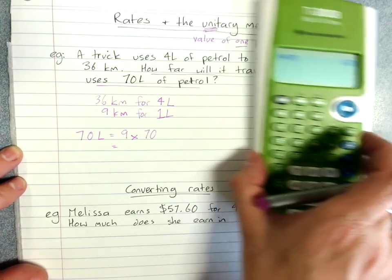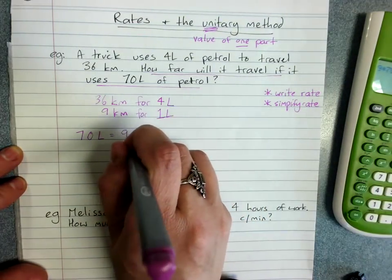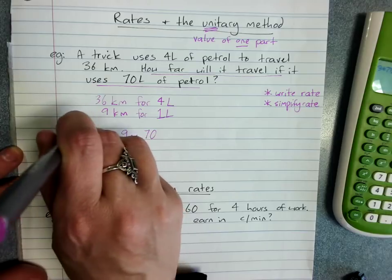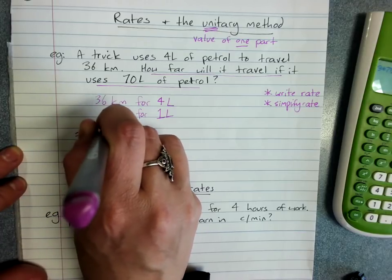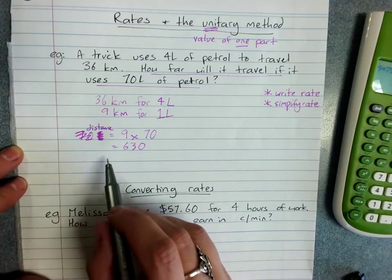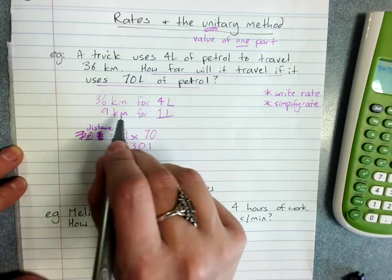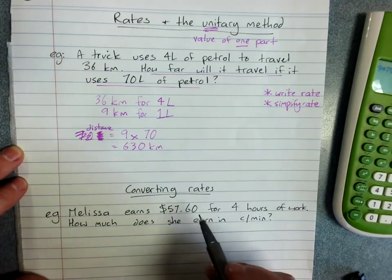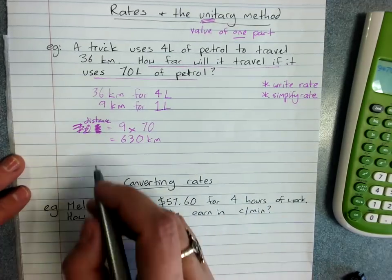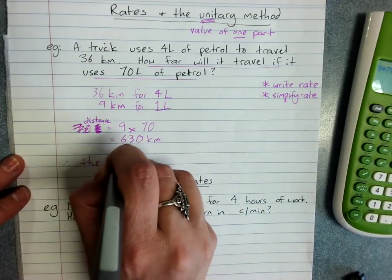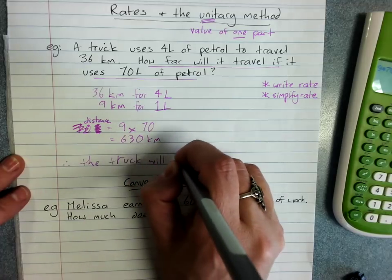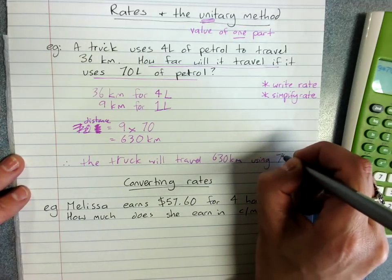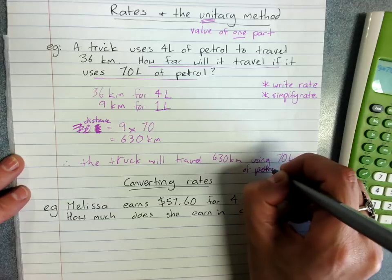630. Now actually technically we probably wouldn't put that liters there. We'd put distance. Sorry, I was being very careless there. Distance, and it's 9 lots or 70 lots of 9 kilometers, so it's 630 kilometers. And because it's a word question, word answer. Therefore the truck will travel 630 kilometers using 70 liters of petrol.